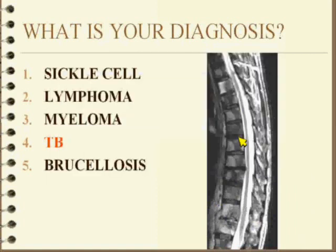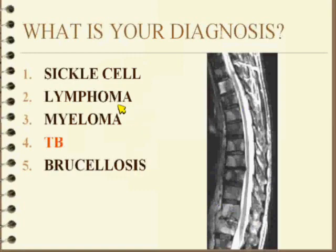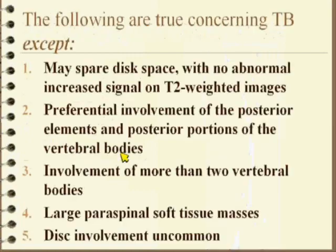Fever, all this stuff going on — so it is infectious etiology. Sickle cell, you'd have to go down a couple steps. You'd have to say they're immunocompromised, maybe they have salmonella osteo going on, but that seems a bit of a stretch. Lymphoma you could include, except for this level that looks like a disc space infection. Myeloma, likewise. Brucellosis, possible but uncommon. You can have diffuse and focal forms of brucellosis. This would obviously be the diffuse form and can, in some sense, mimic tuberculosis. So that's not an unreasonable second choice, but TB is the correct answer.